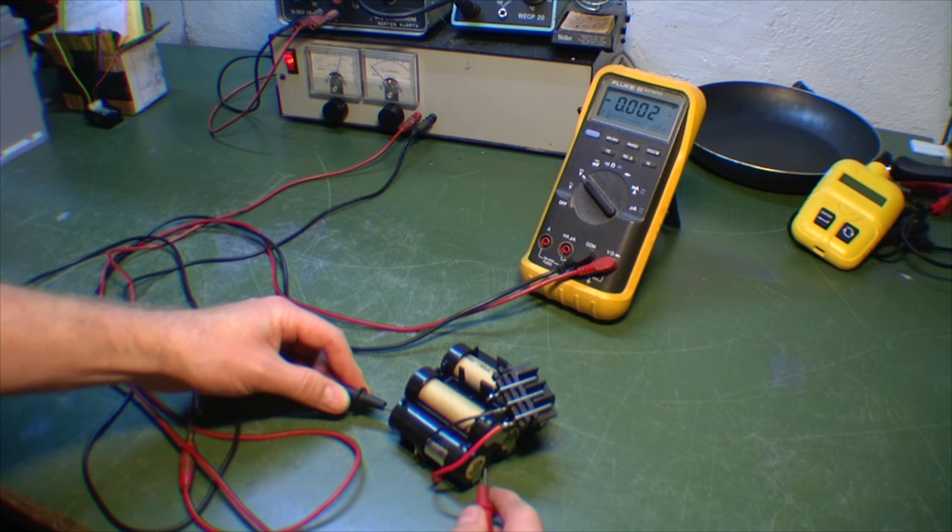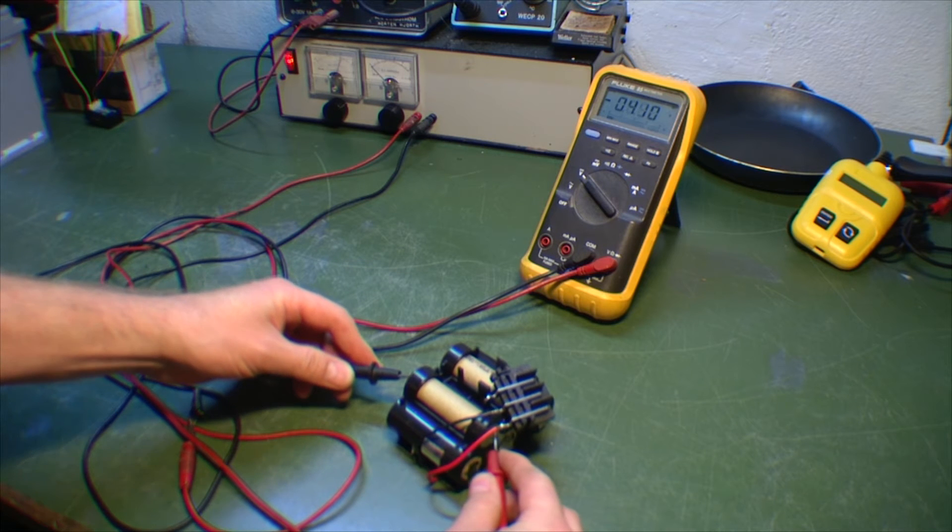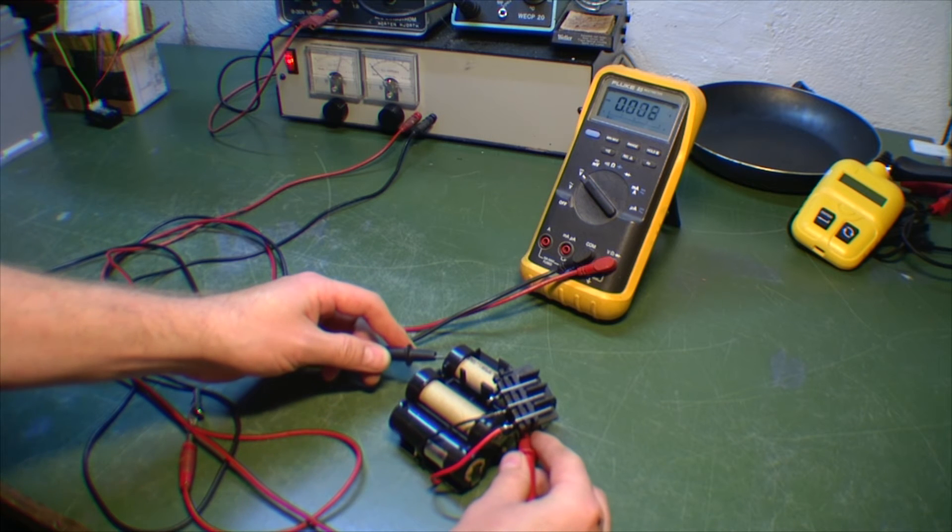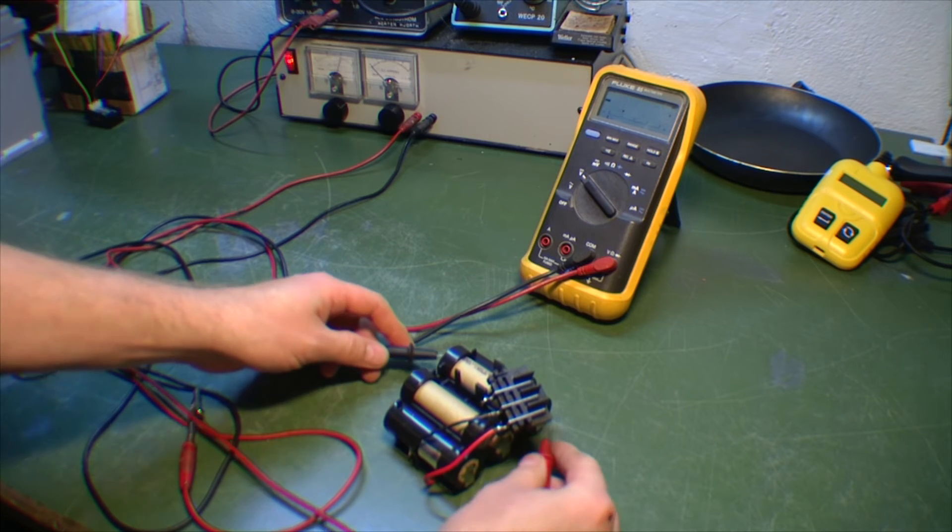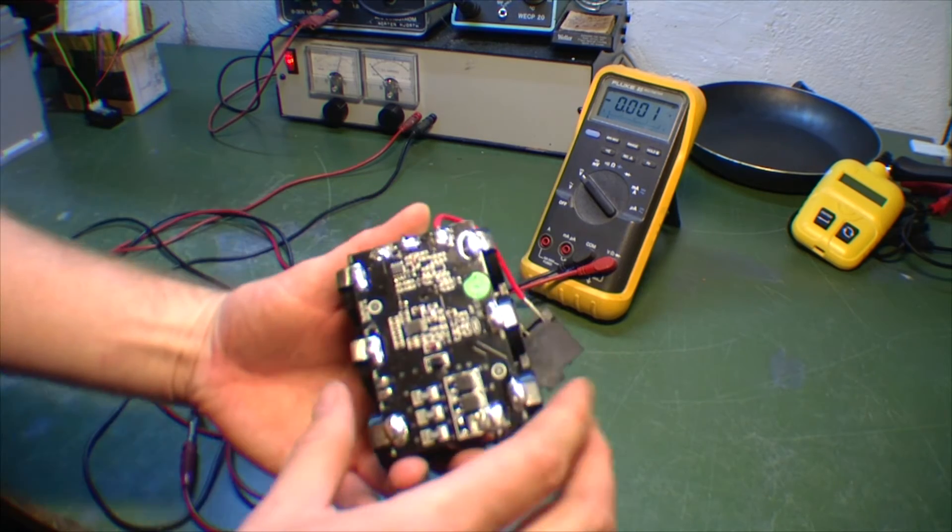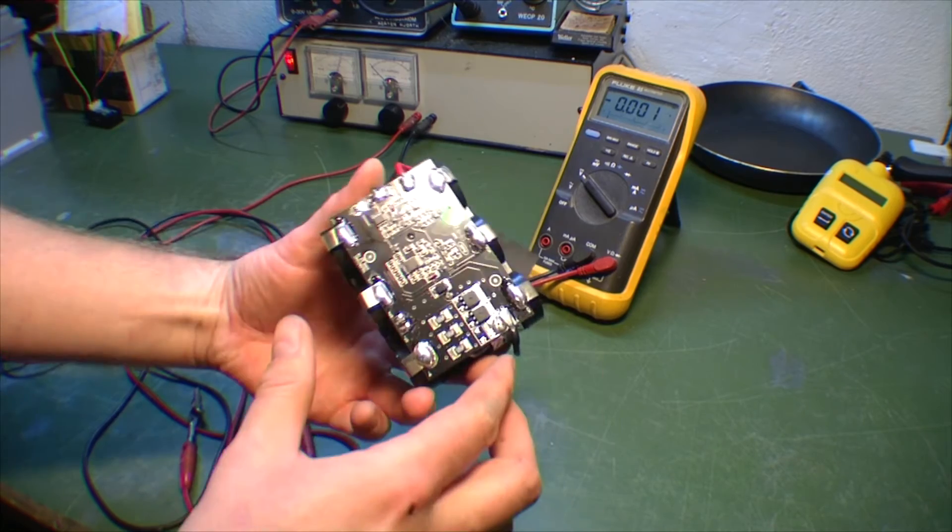And let's just measure some cells. That's 4.1 volts, 4.1, 4.1, 4.16 and 4.1. Actually, the electronics is pretty good at keeping the cells at the same level. That's pretty neat.